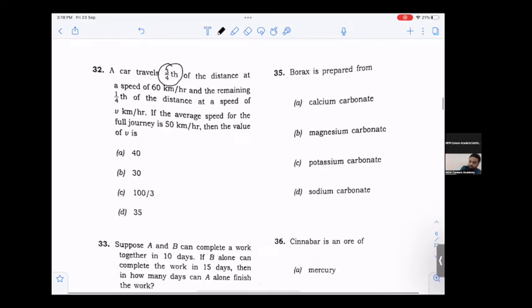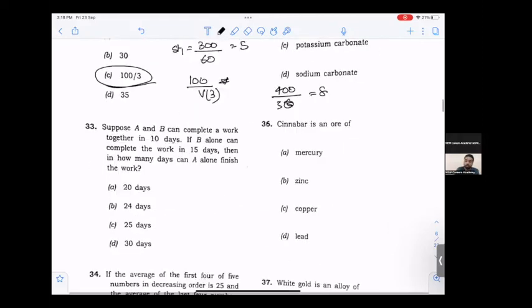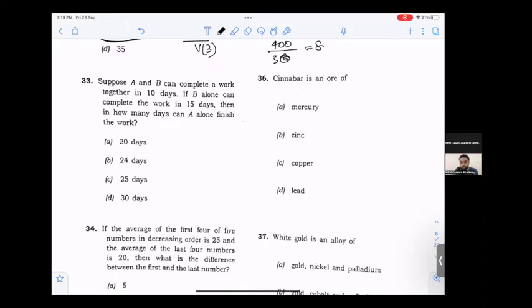A car travels three-fourths of the distance. Total distance is 400, so three-fourths is 300. At speed 60 km/hr, time taken is 5 hours. The remaining one-fourth distance is 100 at speed v. Average speed for full journey is 50 km/hr, so total time is 8 hours. That means the remaining 100 km was covered in 3 hours, so v equals 100 upon 3 km/hr.